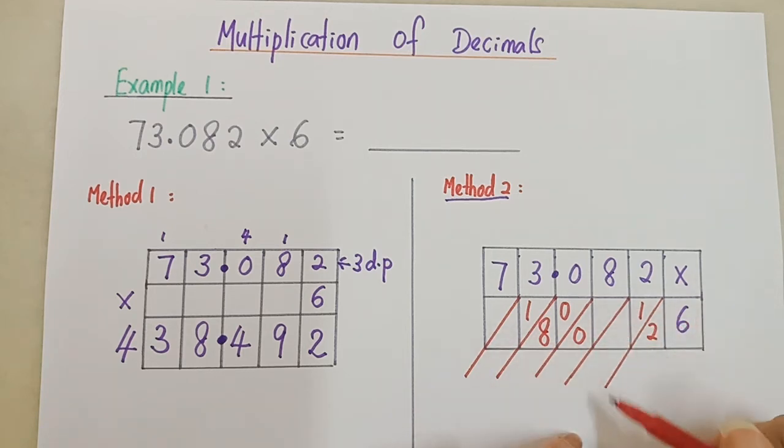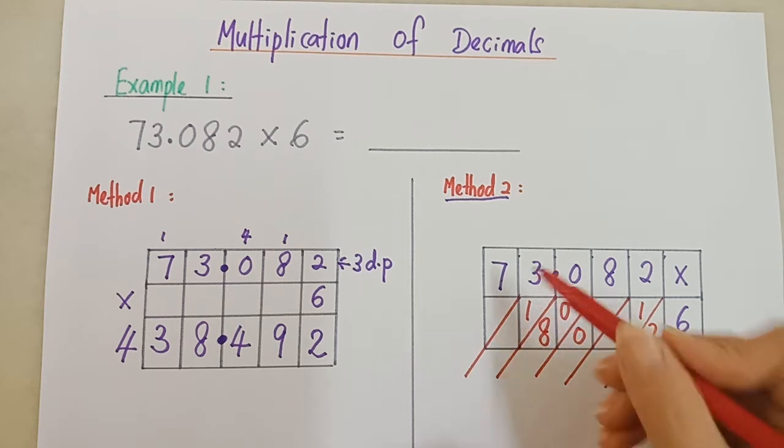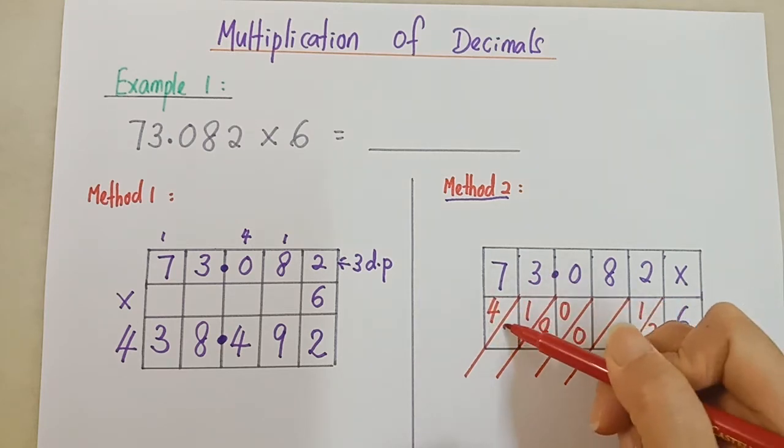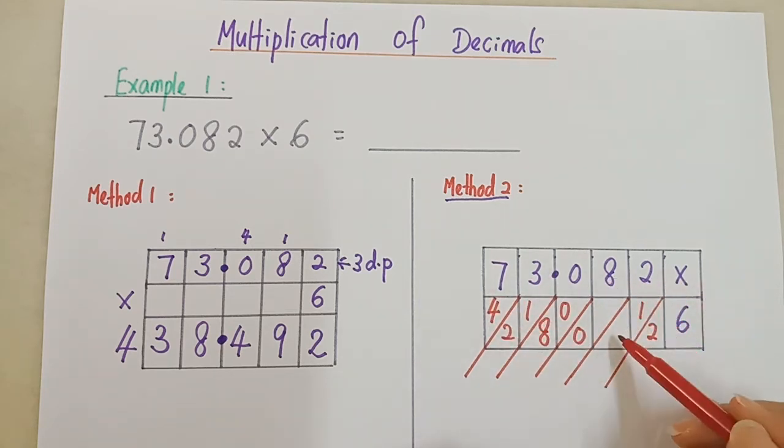Left another 2. Maybe I want to start, I want to do this one. 7 times 6 is 42. 4, 2. For this one, the last one, 8 times 6, 48.